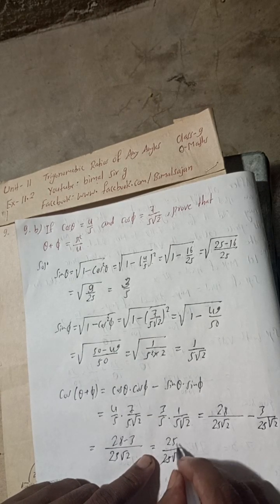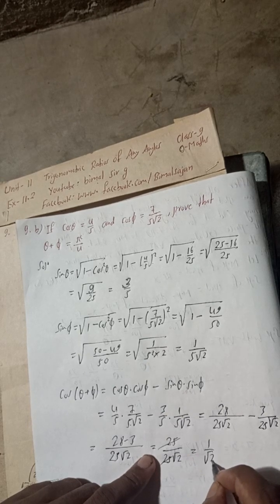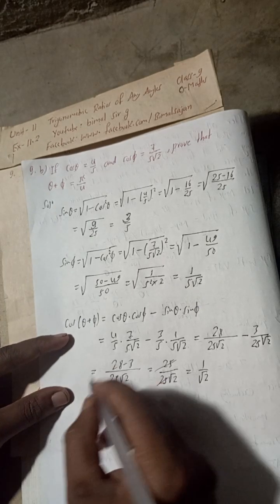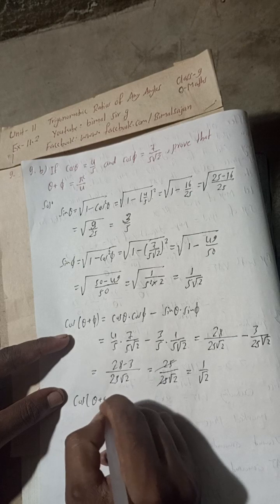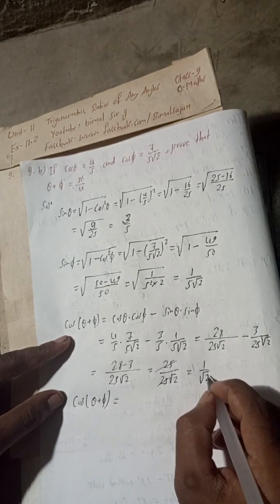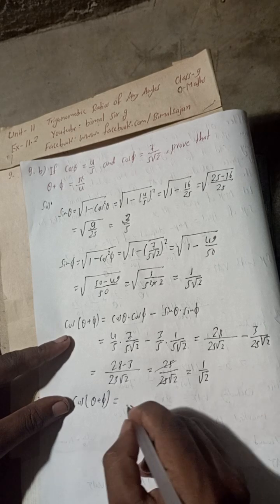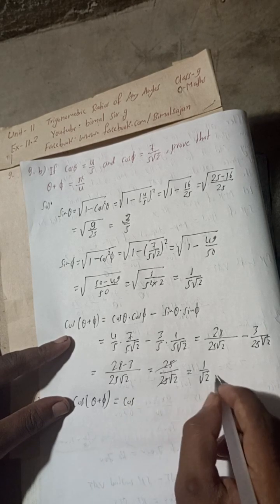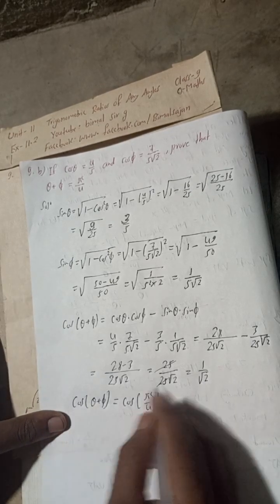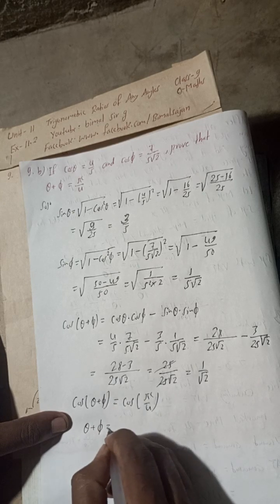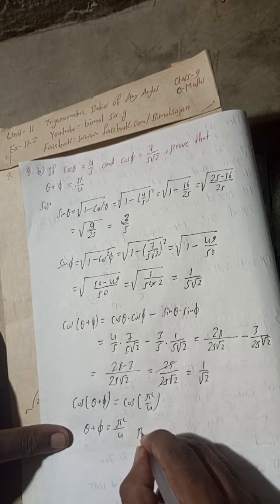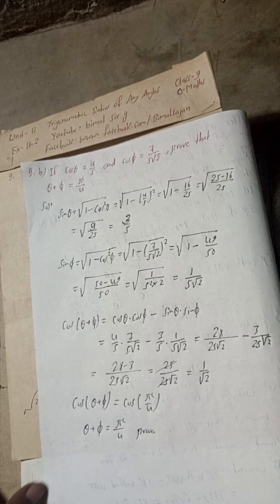28 - 3 = 25, so this equals 25/(25√2). The 25s cancel, giving us 1/√2. This is the value of cos(θ + φ), and 1/√2 is the value of cos 45°, which equals π/4 radians. Therefore, θ + φ = π/4, which is proved.